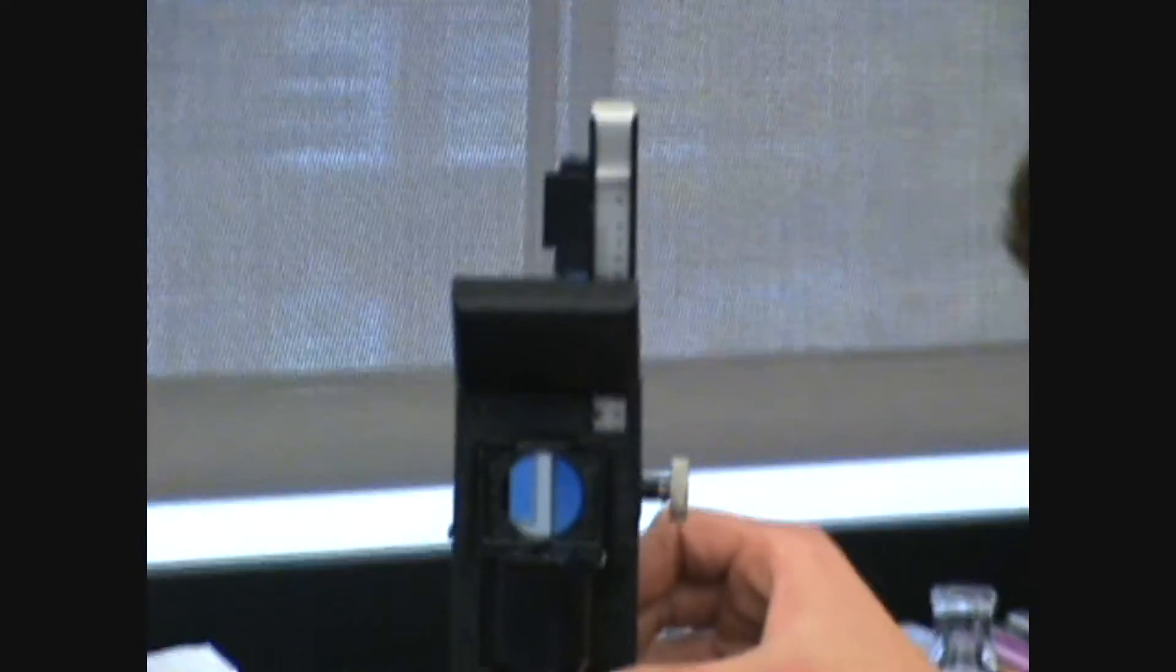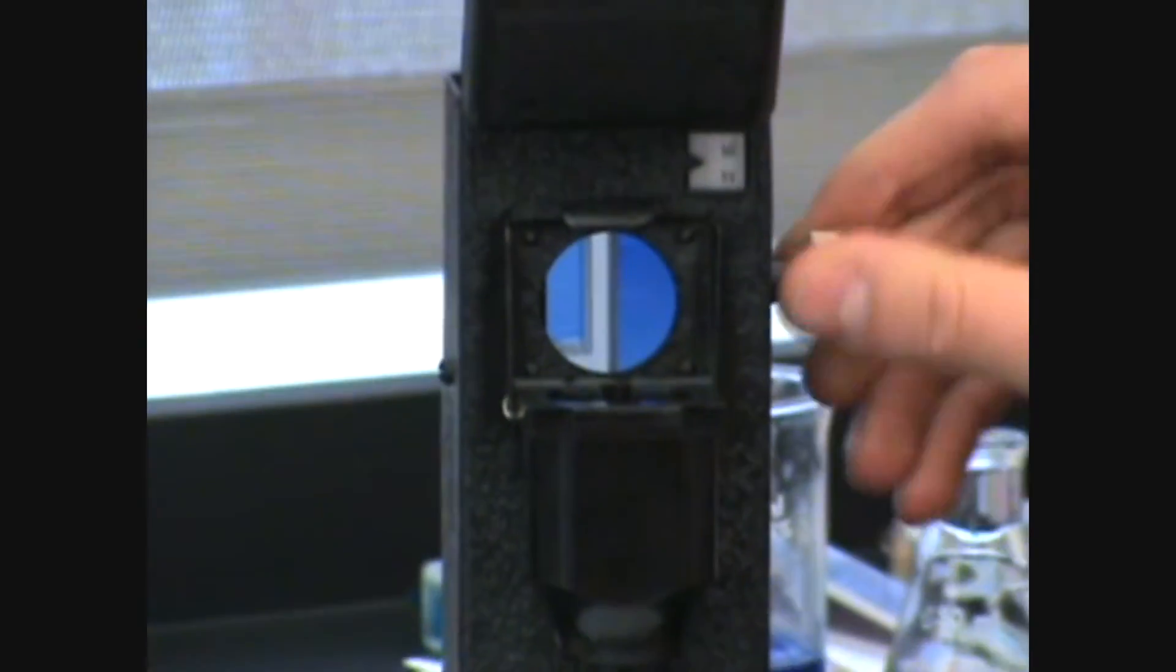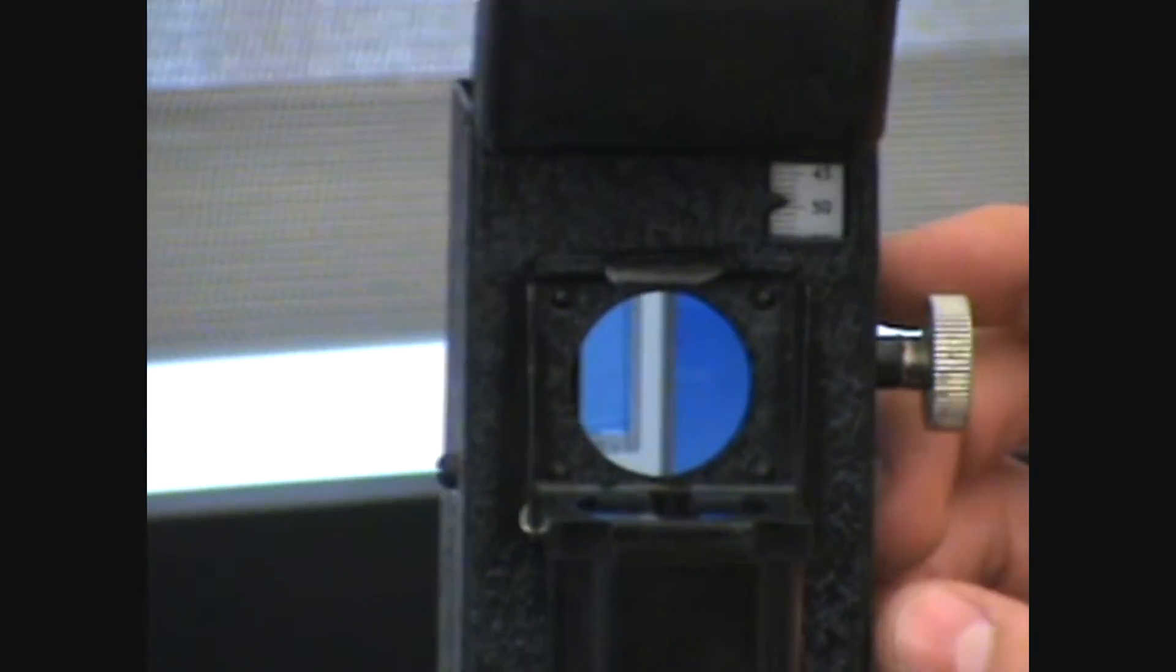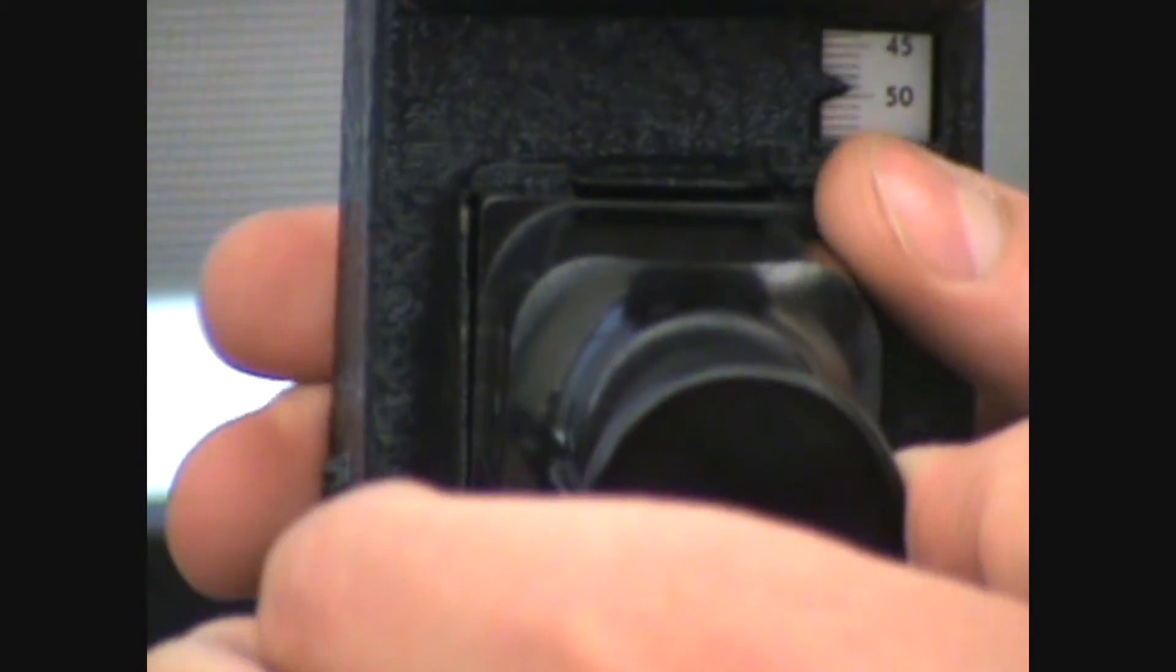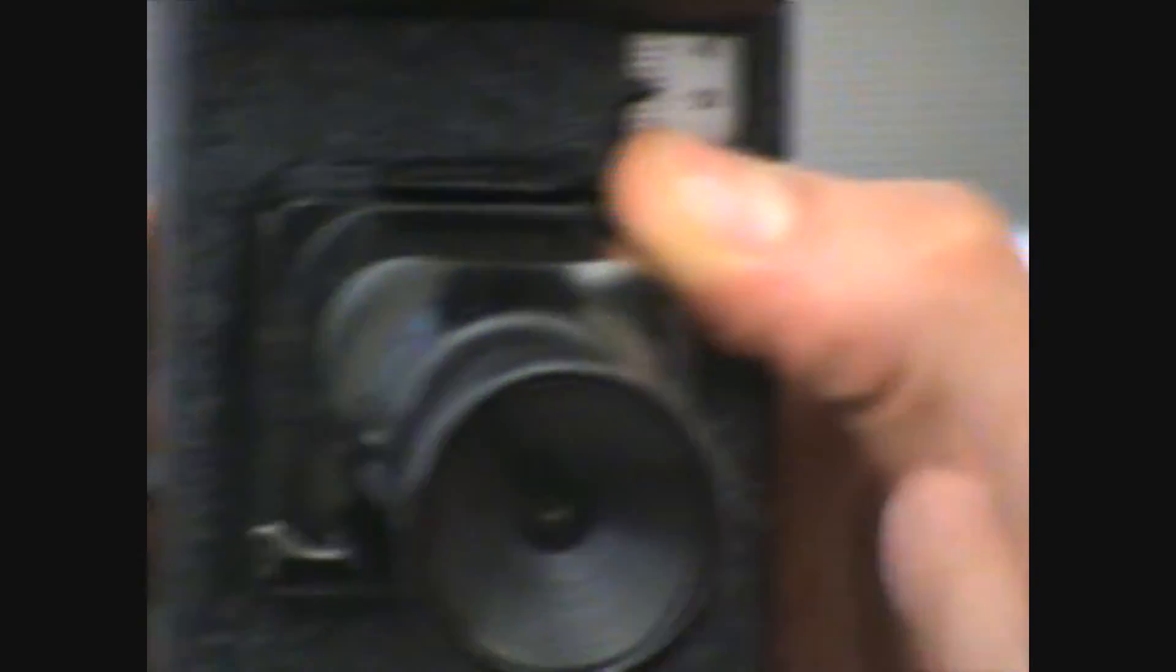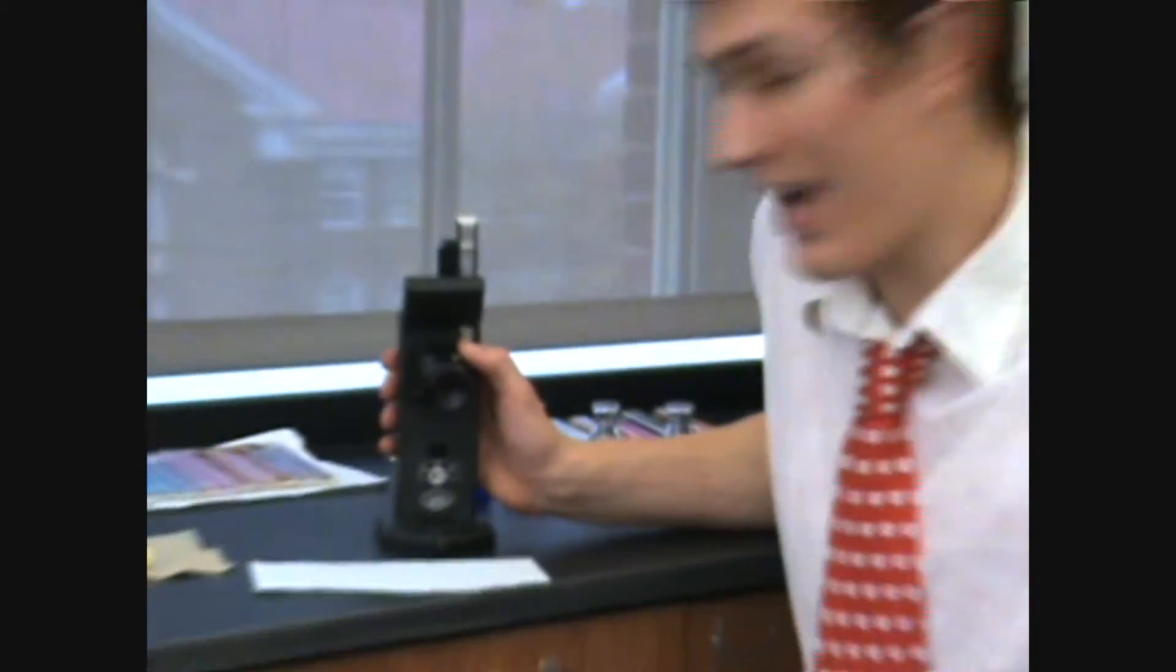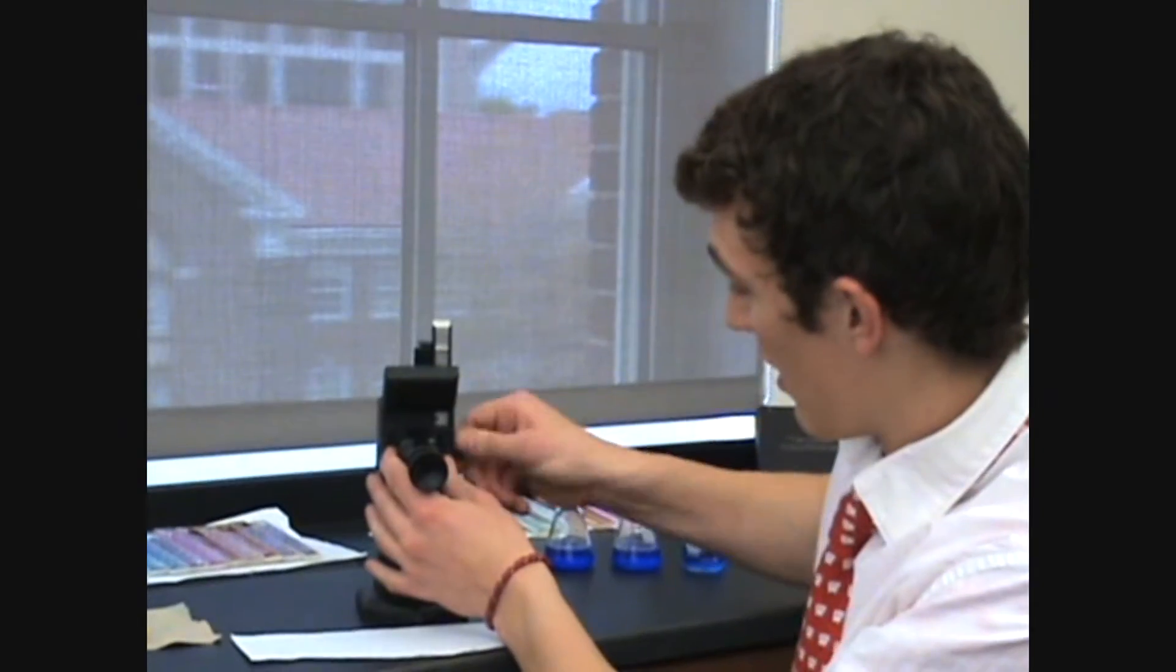Then, if you look through this hole right here, you can see that both the standard and the unknown cup are visible. So, then when you put the eyepiece up, you look through the eyepiece and it compares them side by side. And you match them until the intensity matches.